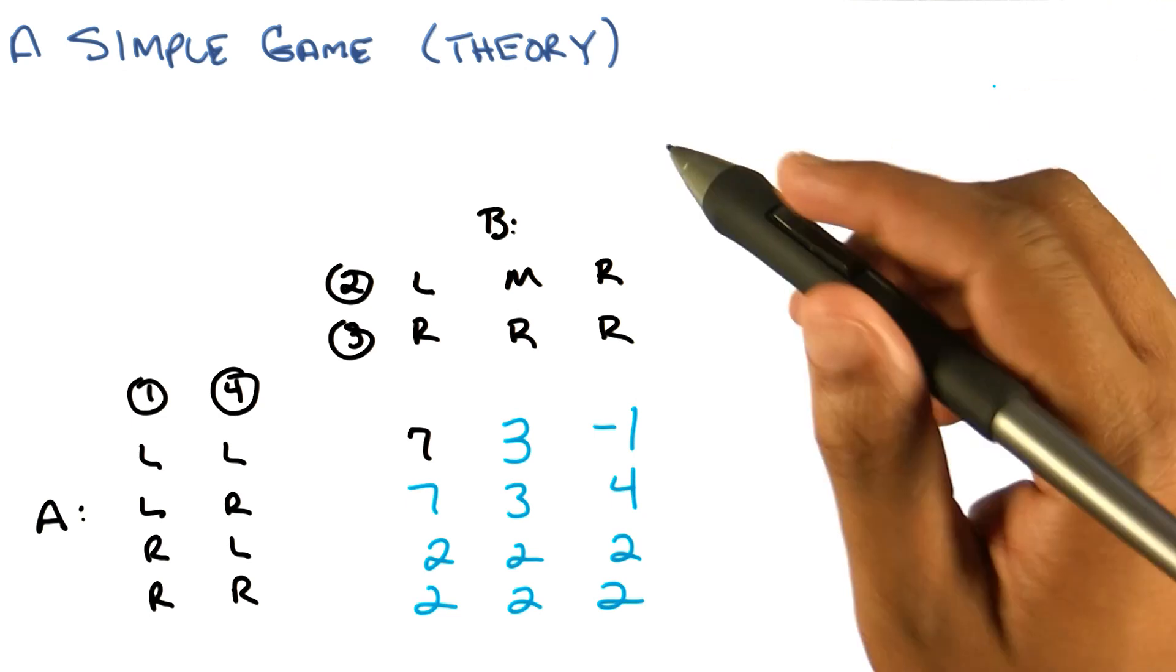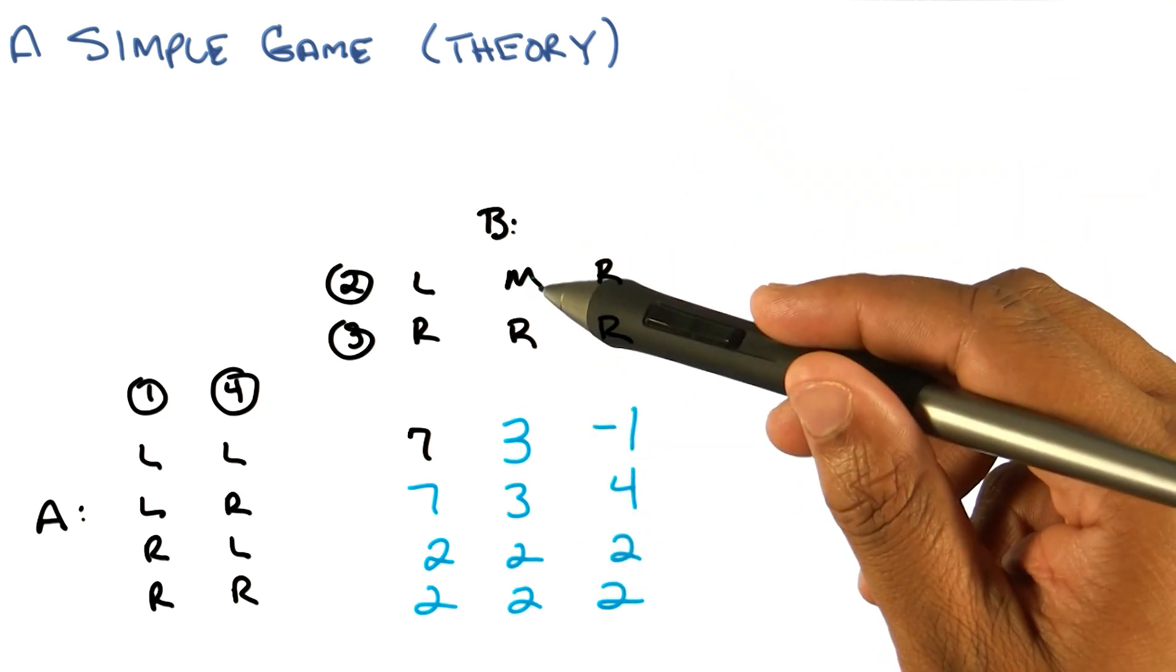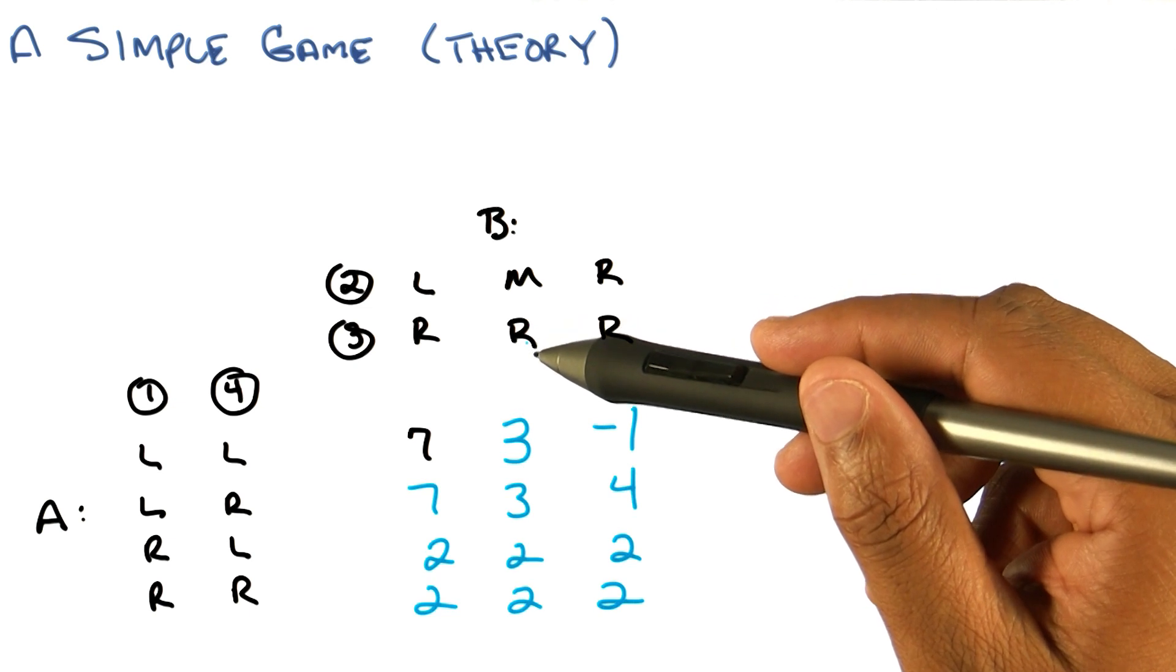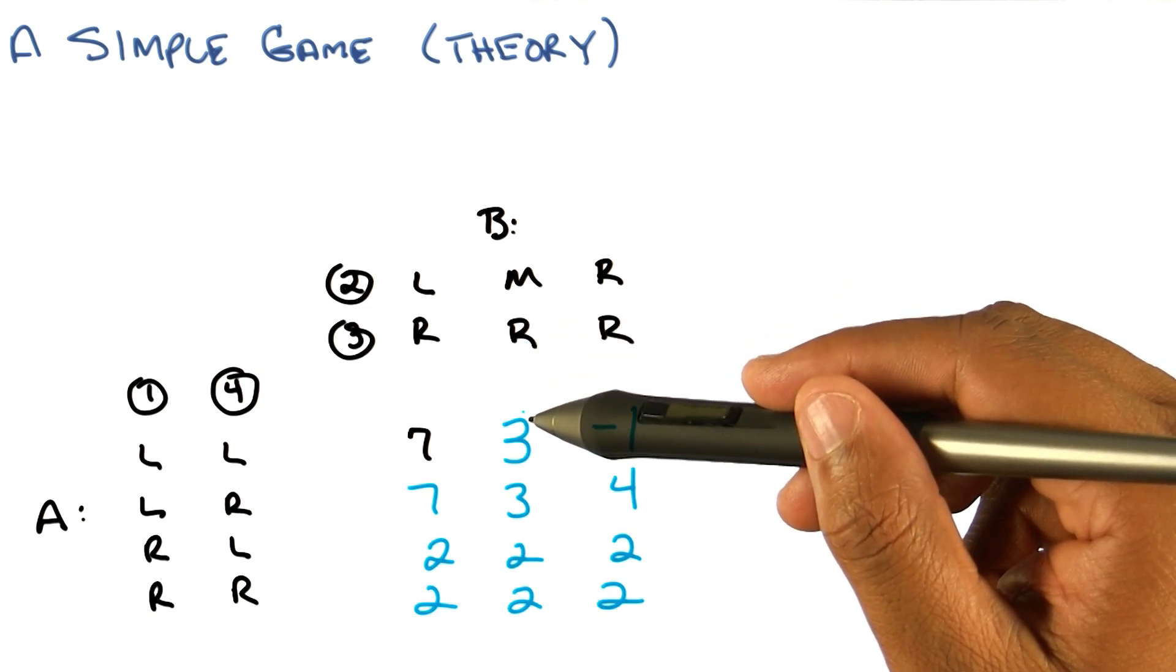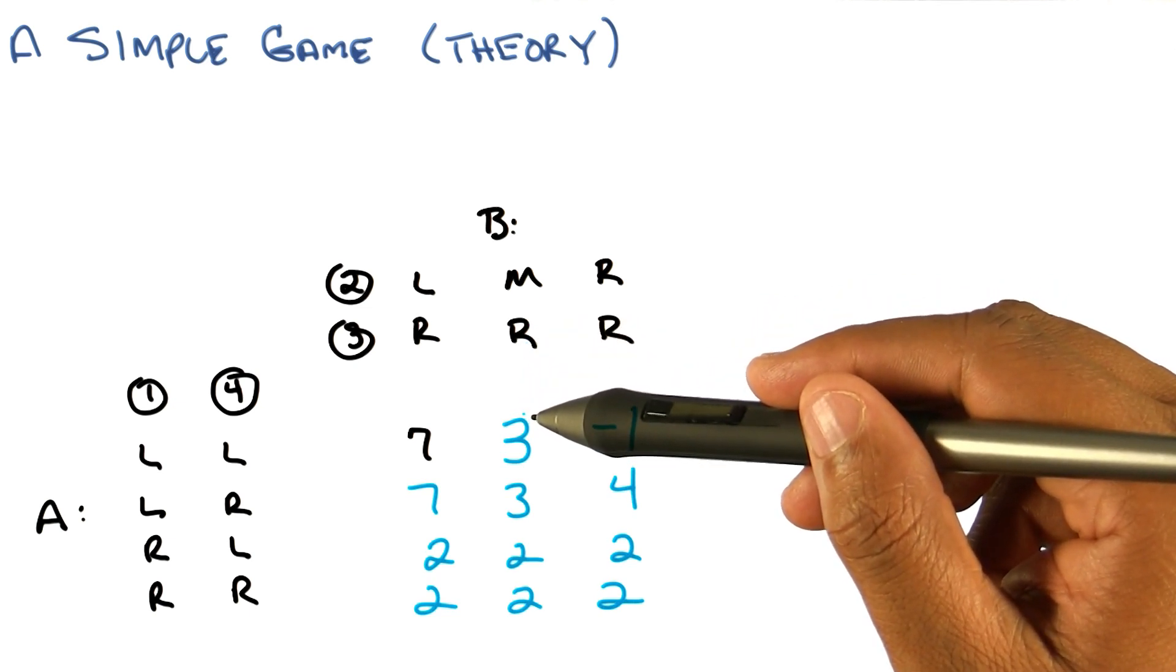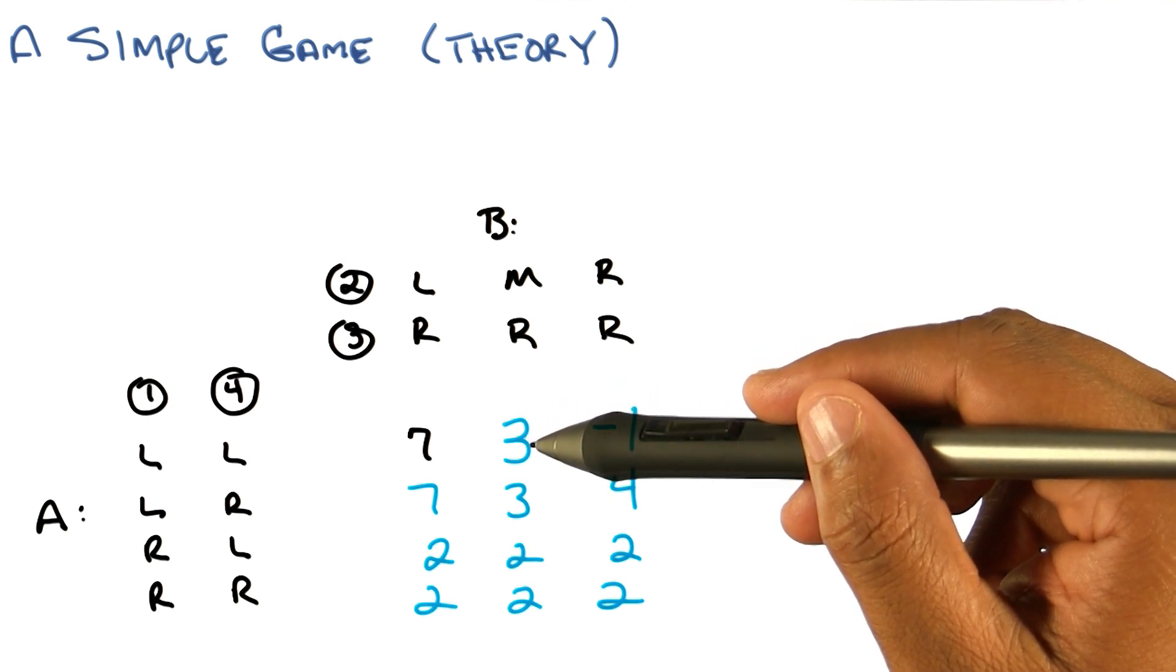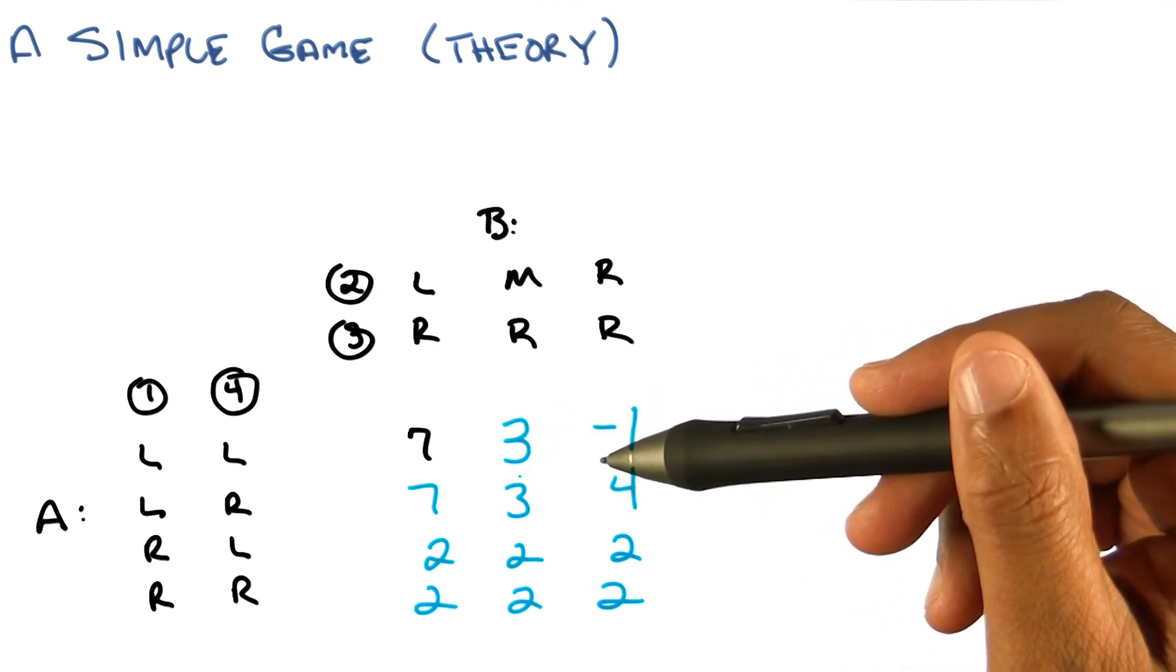So B could choose the middle column. Yes. Which then A would choose a two. A would choose, A would choose what? One of the twos, one of the bottom two rows. No, A wouldn't. Oh right, A's trying to maximize. So A would choose one of the top two rows. Oh yeah, that makes more sense. Right. And choose a three.